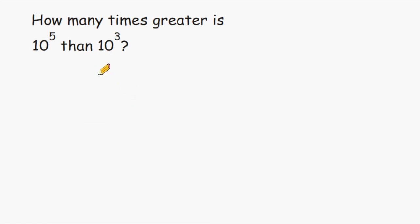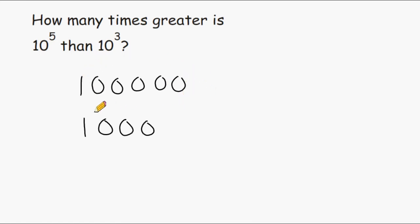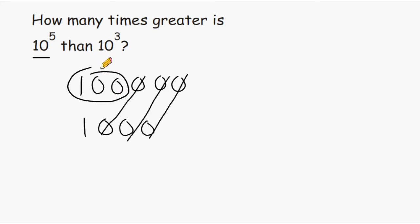For this problem we have to figure out how many times greater 10 to the fifth power is than 10 to the third power. Remember, when anything is in base 10, we write a number 1 and write that many zeros after it. So 10 to the fifth is a 1 followed by 5 zeros, and 10 to the third is a 1 followed by 3 zeros. We can cross out an equivalent number of zeros to find that 10 to the fifth is actually 100 times greater than 10 to the third power.